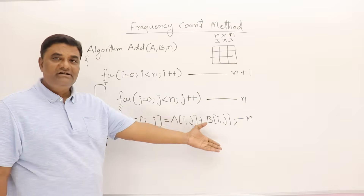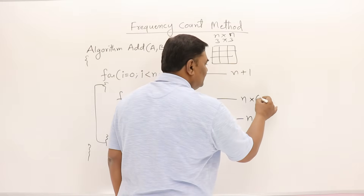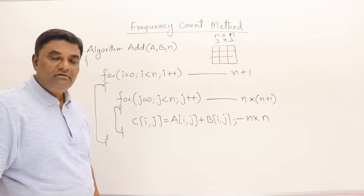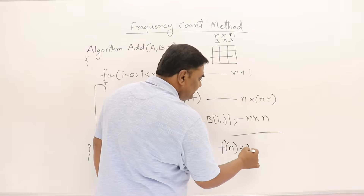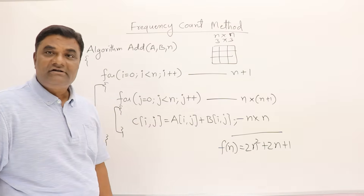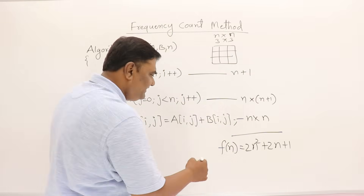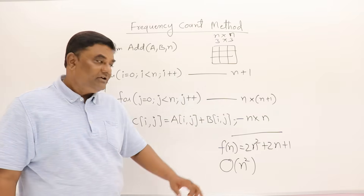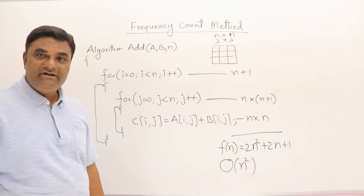Two statements are there inside the outer loop, each taking n times. Then there is an inner loop, which also takes n plus one time, and whatever is inside will execute for n times. So the time function f(n) is: 2n² + 2n + 1 — approximately 2n² + 2n + 1. The highest degree is 2, so we write the time complexity as order of n².